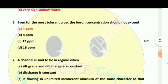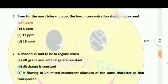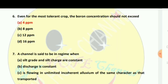Even for the most tolerant crop, the boron concentration should not exceed 4 ppm. The correct answer is 4 ppm.